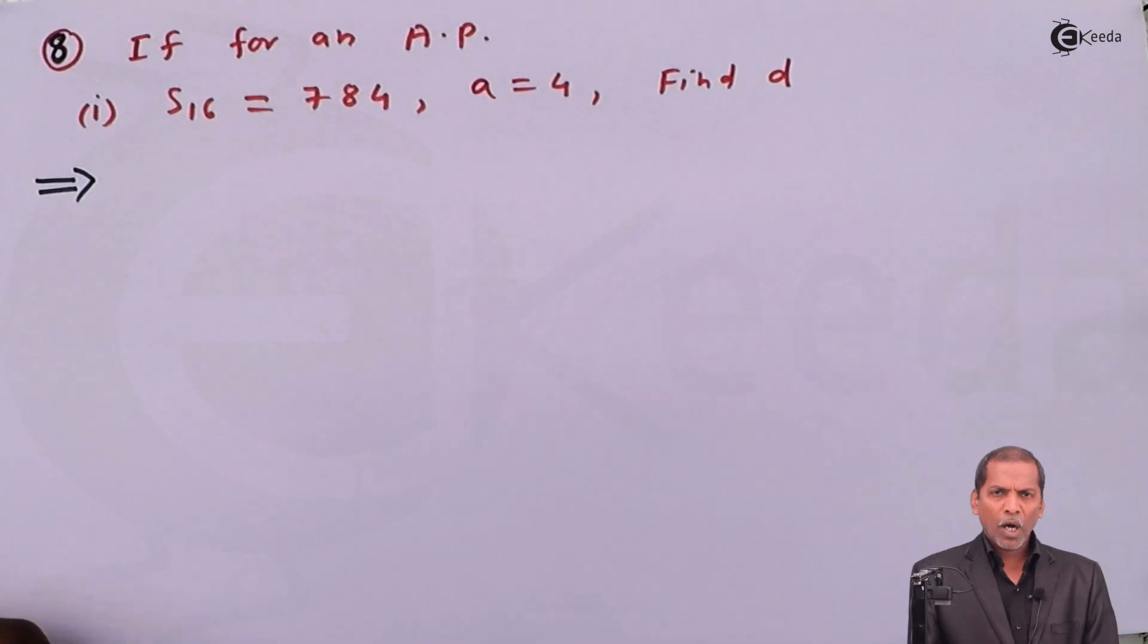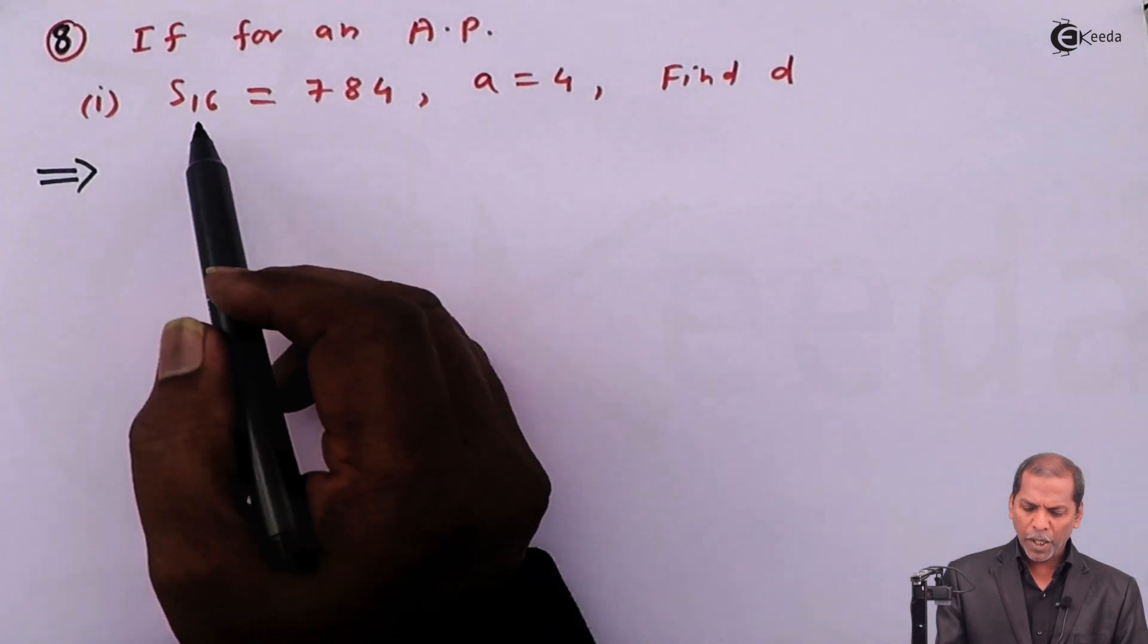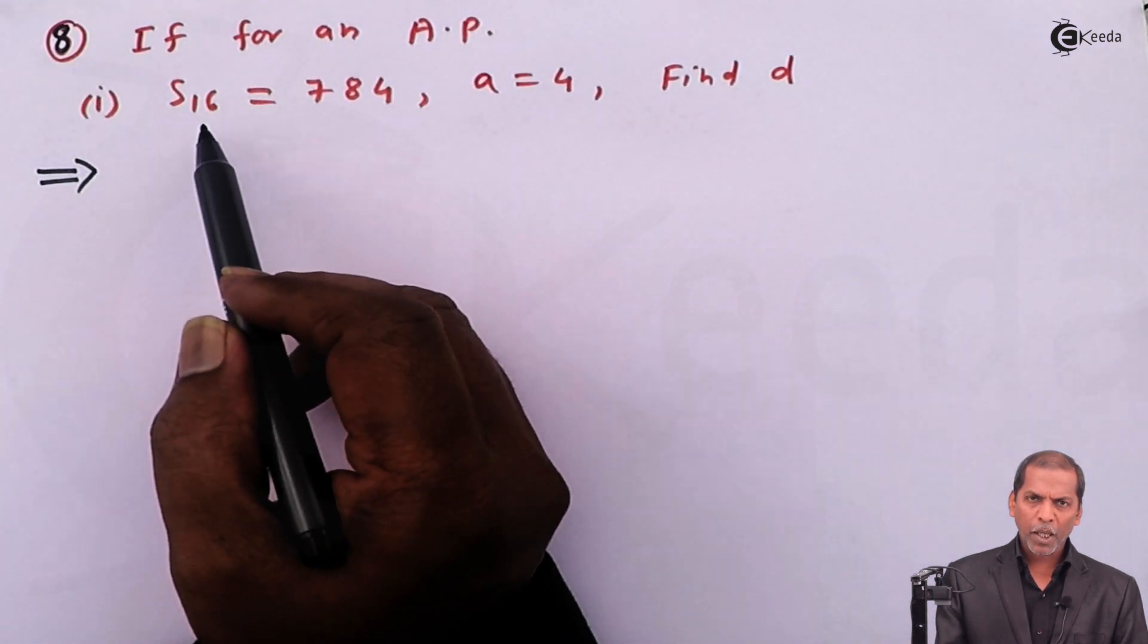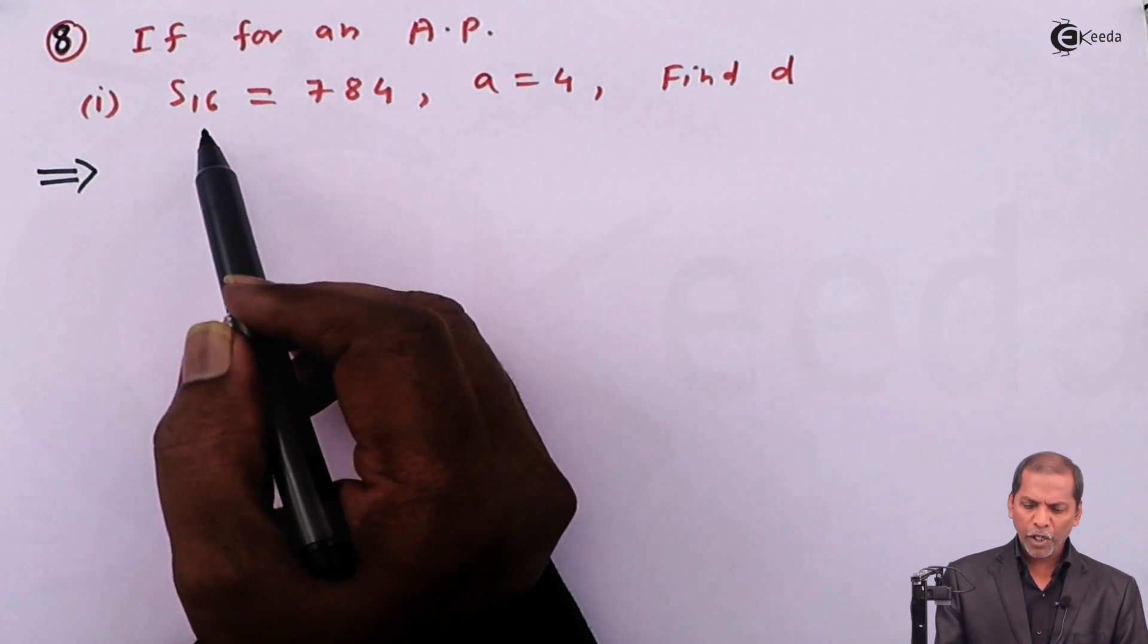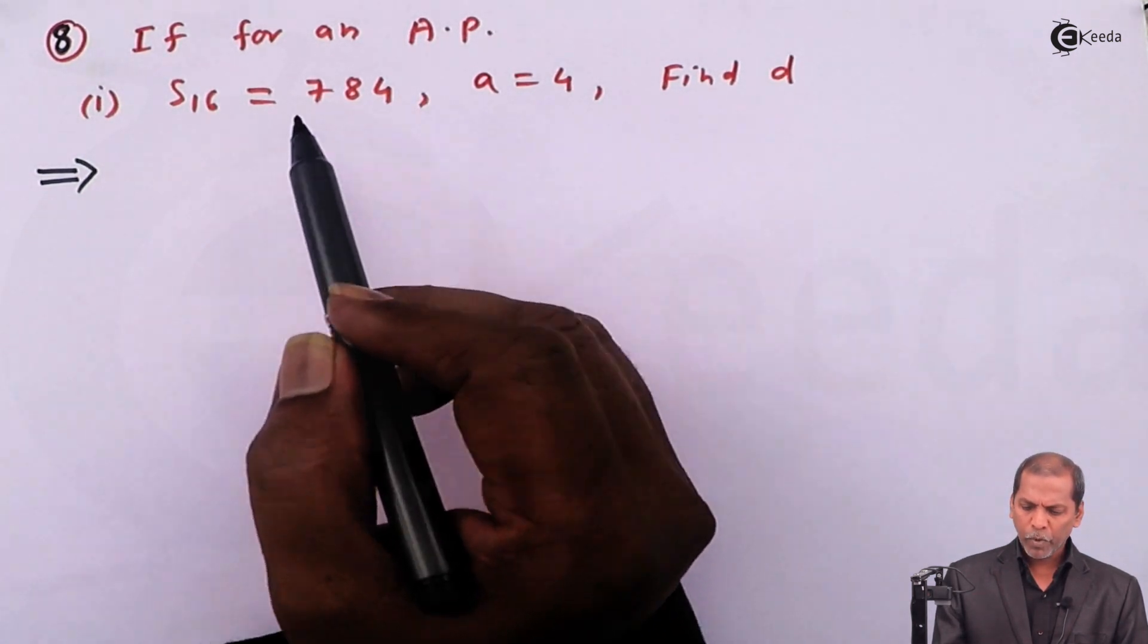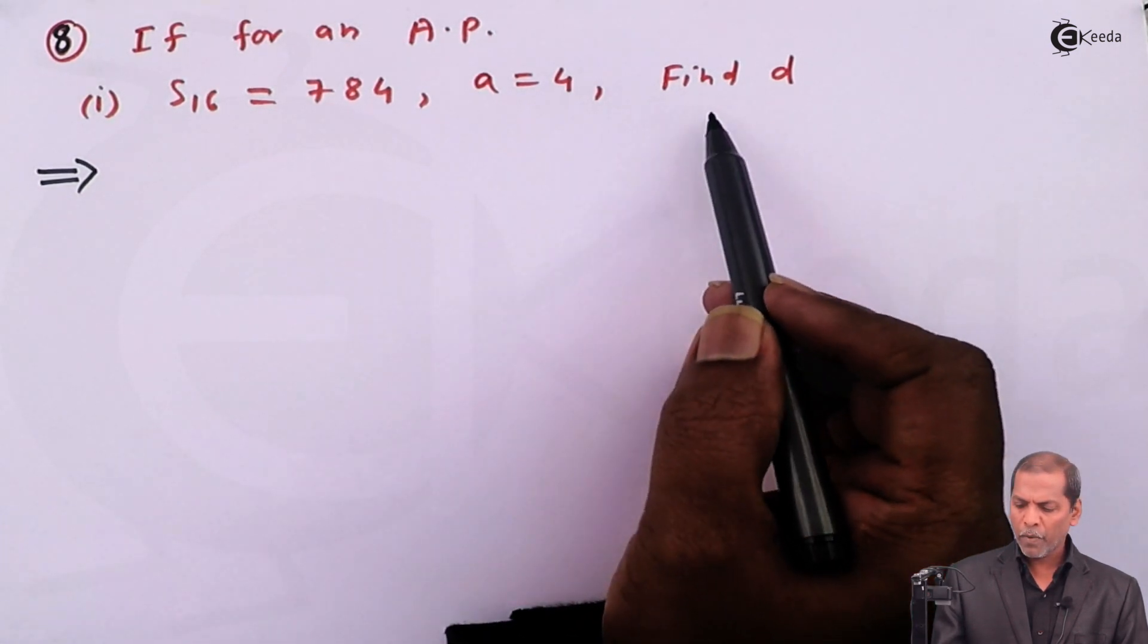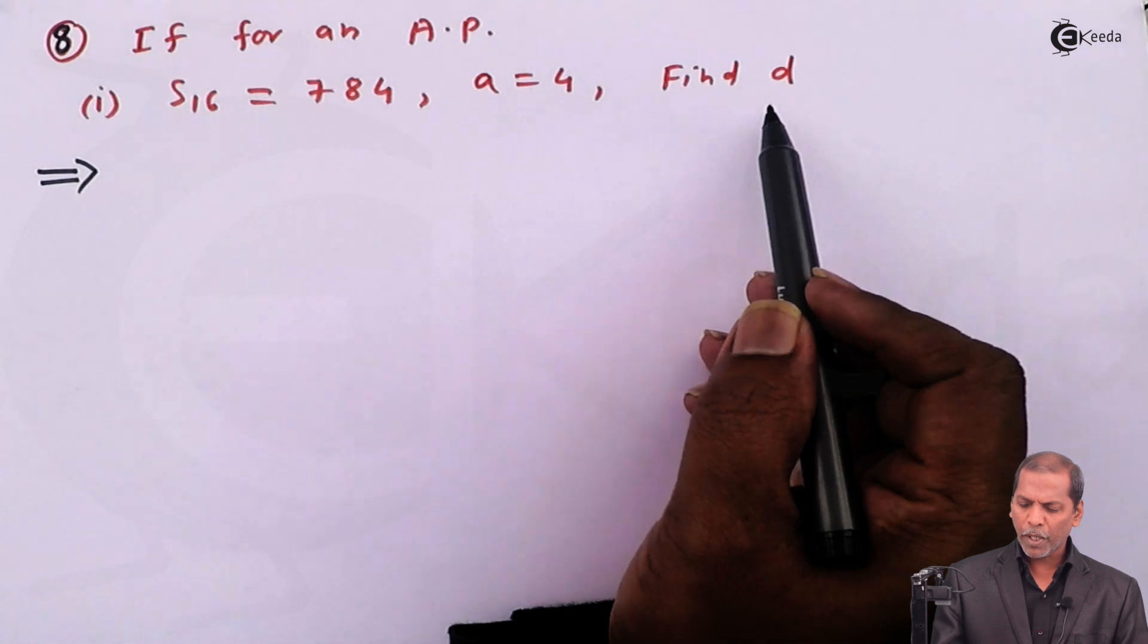Hello friends, now we see question number 8, which is based on the sum of first n terms of an AP. In this question, we have given S16, that is sum of first 16 terms, is equal to 784. The first term a equals 4, and we have to find the value of common difference d.